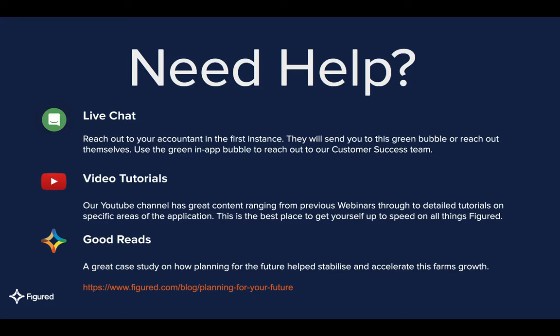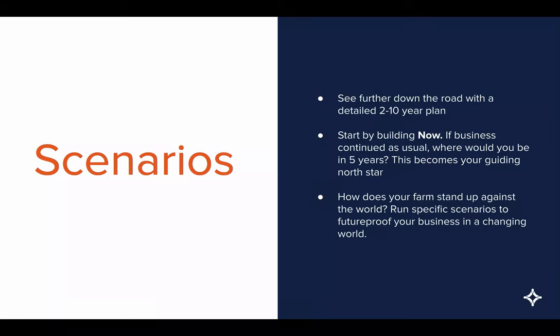A brief recap on the scenario tool: in the last session we looked at the why around planning and why it's so important to have a long-term plan for your business in order to help yourself grow and achieve success, or to mitigate for a future emergency event. The scenario tool helps you do this by seeing further down the road with a detailed two-to-ten year plan. You create your status quo scenario — your business as usual if nothing had changed — and this becomes your guiding north star. You also create actual scenario models around where your farm could go in the future.